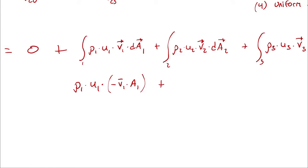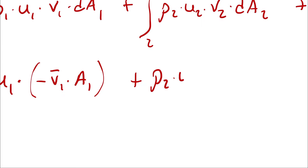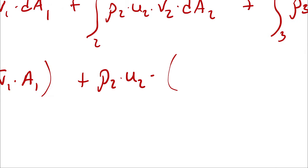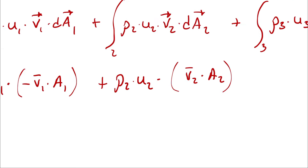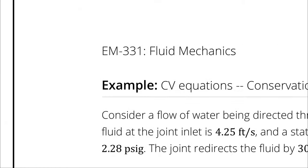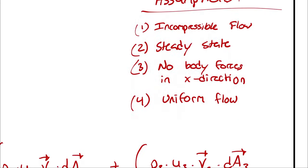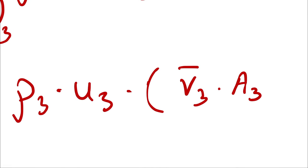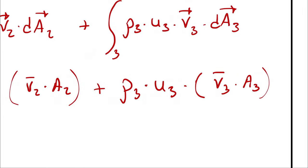At state 2, I have rho₂ times u₂ times the average velocity at state 2 times area 2 — that's a positive quantity because the area vector and velocity vector are in the same direction. Lastly, at state 3, rho₃ times u₃ times average velocity at state 3 times area 3, also positive for the same reason: the velocity vector and area vector are in the same direction.